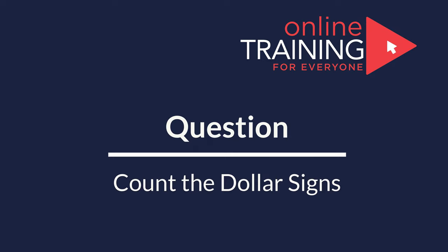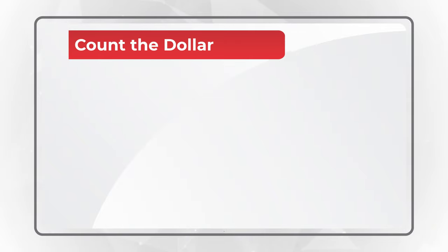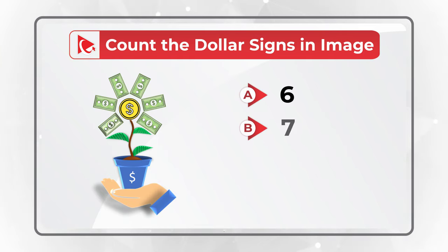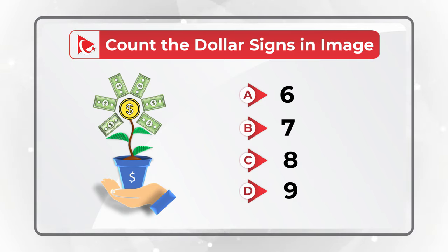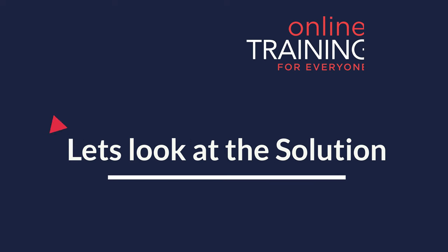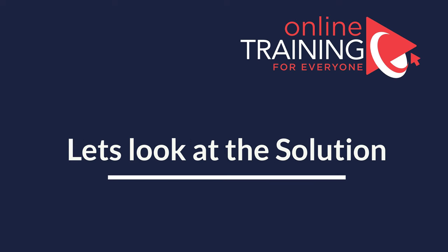Here's an interesting and very unusual question where you need to count all dollar signs in the image. You're presented with a flower image that has many dollar signs, and you need to select the final answer out of four choices: A. 6, B. 7, C. 8, and D. 9. Do you see the answer? Give yourself a little bit of time to count all possible options. I am moving forward to share my version of the solution, and if you have a better way to solve it, please post in comments.